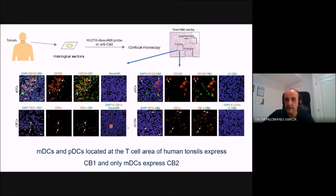In contrast, type 2 conventional dendritic cells but not plasmacytoid dendritic cells expressed CB2 at the protein level in the T-cell areas of human tonsils.